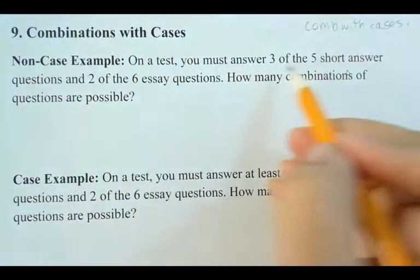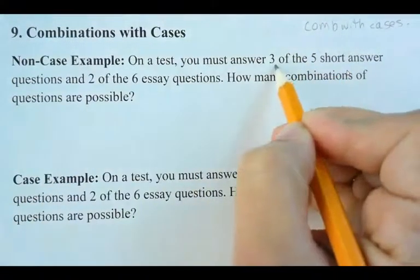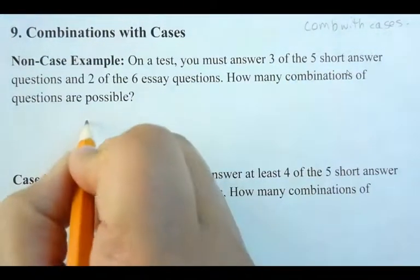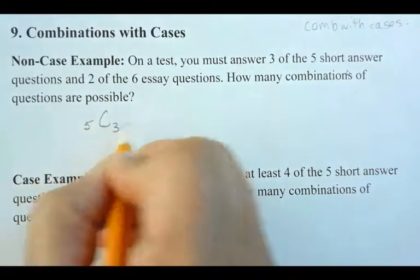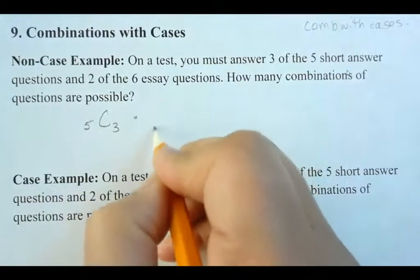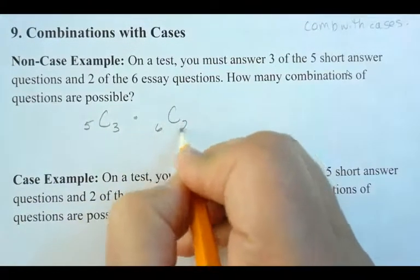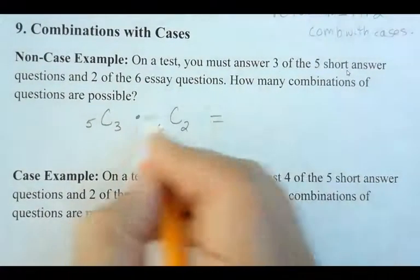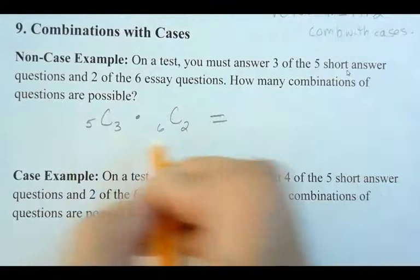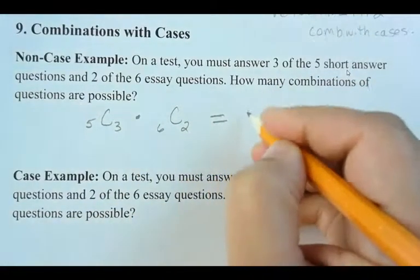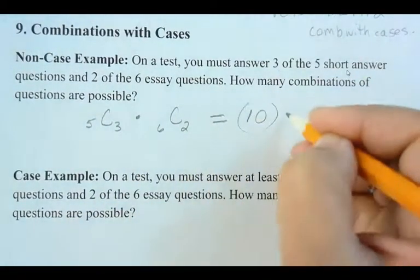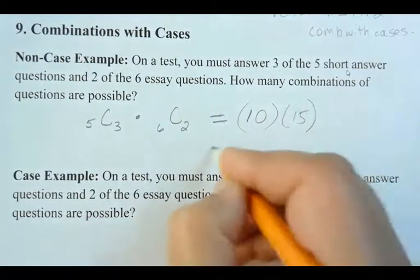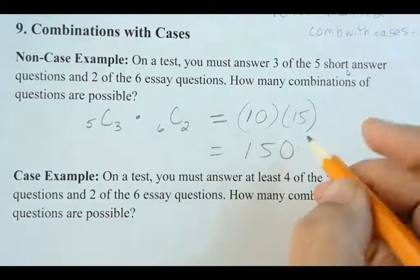All right, so here we have to choose three of the five here, so 5C3, and also we've got six, and we have to choose two of them. Okay, so this is where we don't have the cases, but we need to look at the two scenarios. So 5 choose 3 is 10, and 6 choose 2 is 15. So we multiply those together, and we get 150.